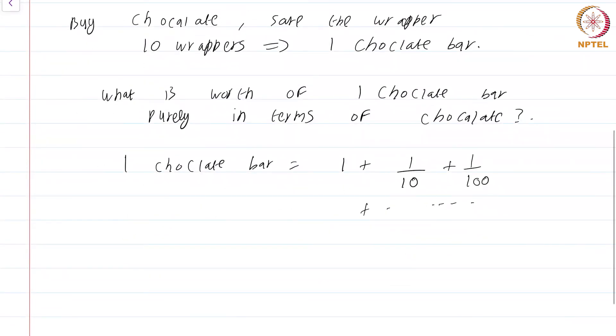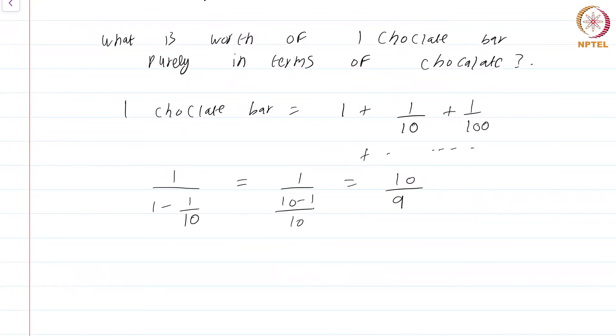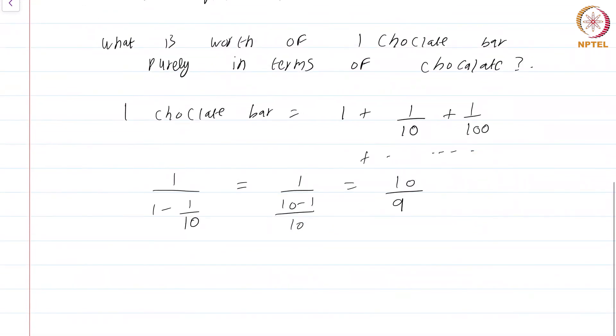In fact, I am sure you know what the sum of the series is. This is called a geometric series. The sum of the series is 1 by (1 minus 1/10), which is actually 1 by (10 - 1)/10, which is 10/9, which is just 1 and 1/9. So a single chocolate bar along with the wrapper is worth slightly more than one chocolate bar purely in terms of chocolate.